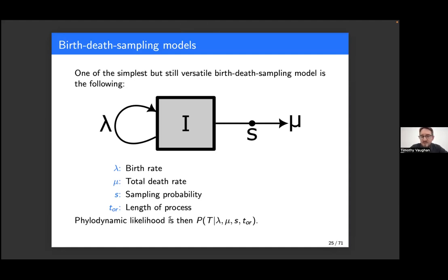With this kind of model we can write down the probability of a phylogenetic tree given all of these parameters. This paves the way to using phylogenetic trees to infer these parameters — so this becomes the likelihood for these parameters given the tree.